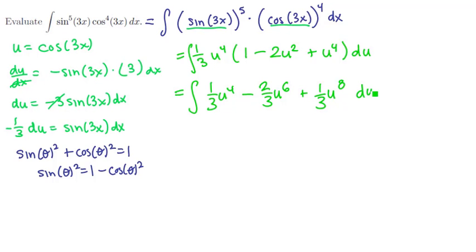Each one of these is a power function, so we can just integrate them term by term. So the 1 third comes along for the ride, and we're going to get here a 1 fifth u to the fifth. Next we'll have a negative 2 thirds and a 1 seventh u to the seventh. And then finally a 1 third, 1 ninth u to the ninth.